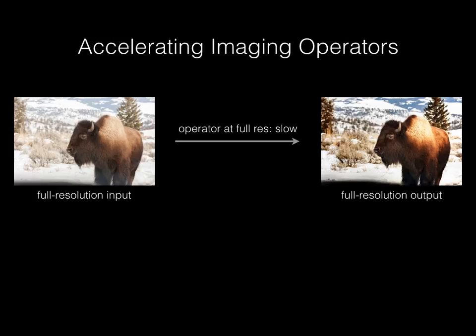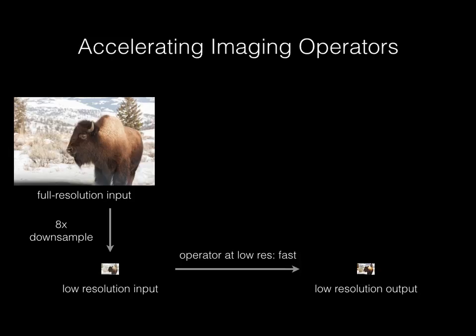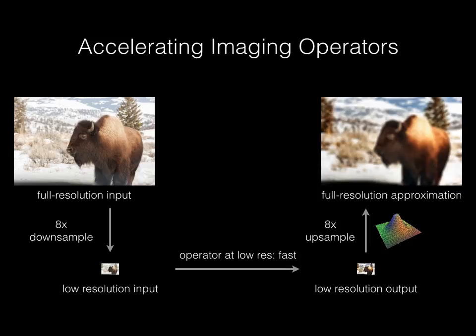The simplest way to make it faster is to downsample it by, say, 8x, and run the operator at reduced resolution. However, to produce the final full resolution output, if you naively upsample the result using something like a bicubic or Gaussian kernel, the result will be blurry since we threw away the high frequency information.